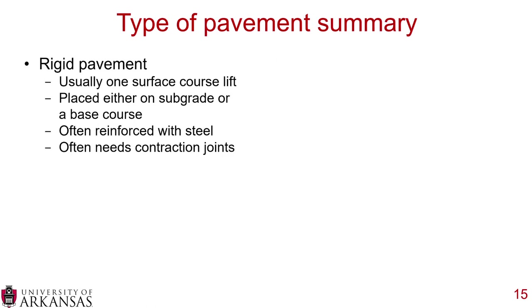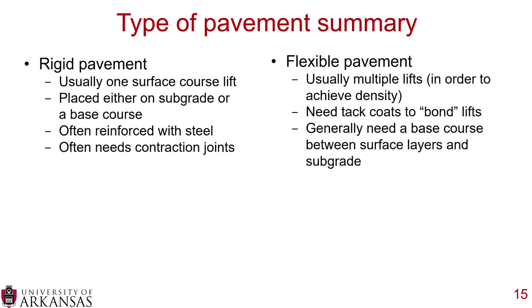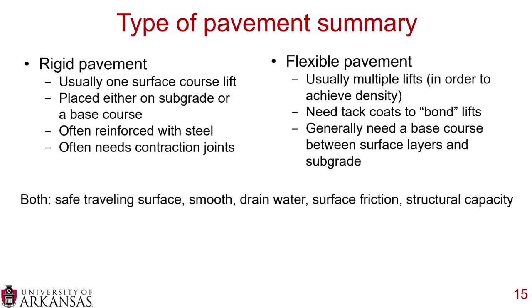In summary, rigid pavements typically have one surface course lift placed on a subgrade or base course, often reinforced with steel and requiring contraction joints. Flexible pavements have multiple lifts to achieve density, requiring tack coats to bond lifts and generally a base course between surface layers and subgrade. Both pavement types provide a safe, smooth, drainable surface with adequate surface friction and structural capacity.